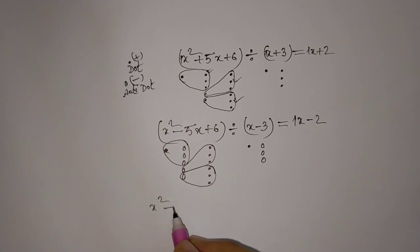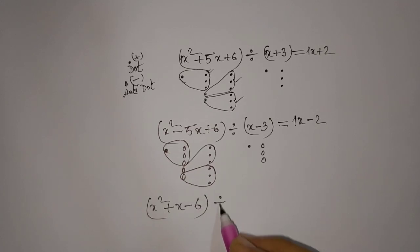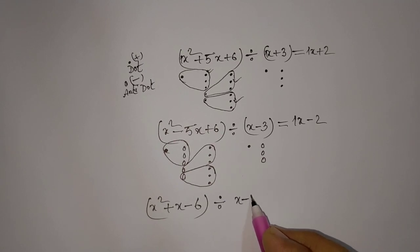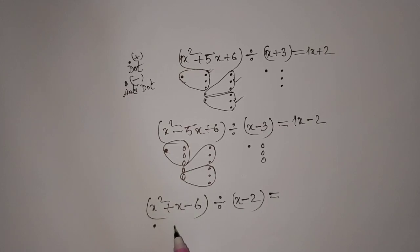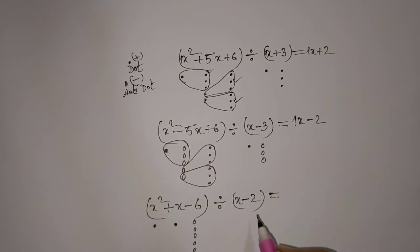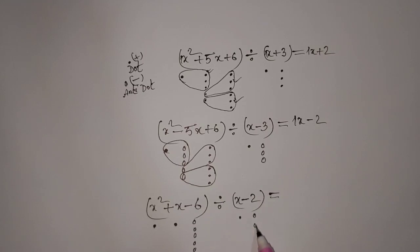x squared positive x negative 6, divided by x negative 2. What do we get? Similar approach — active dot for the x squared. Anti-dot for the constant negative 6. For x coefficient 1, active dot. Then for negative 2, two anti-dots. Then we group and carry forward like this.